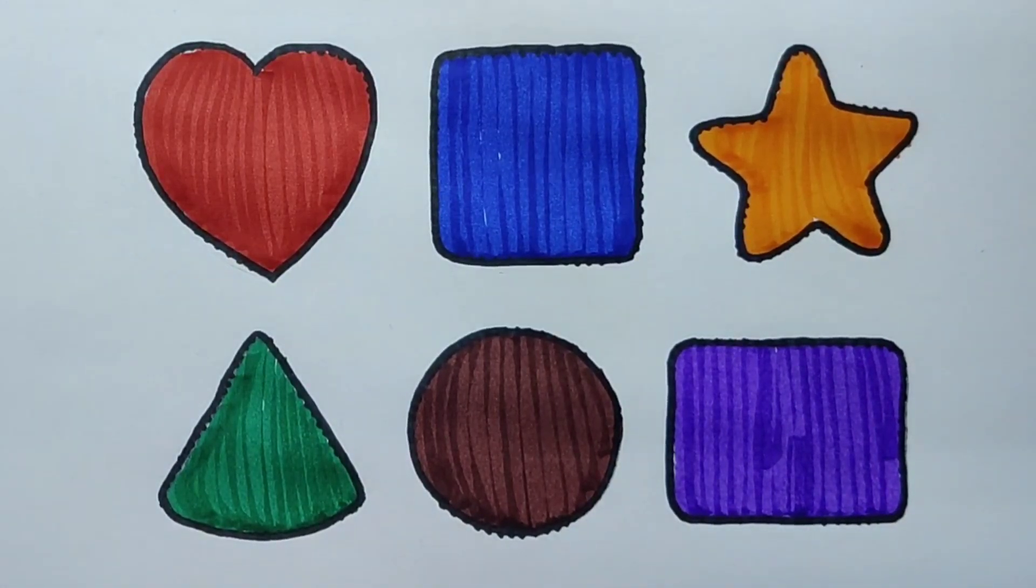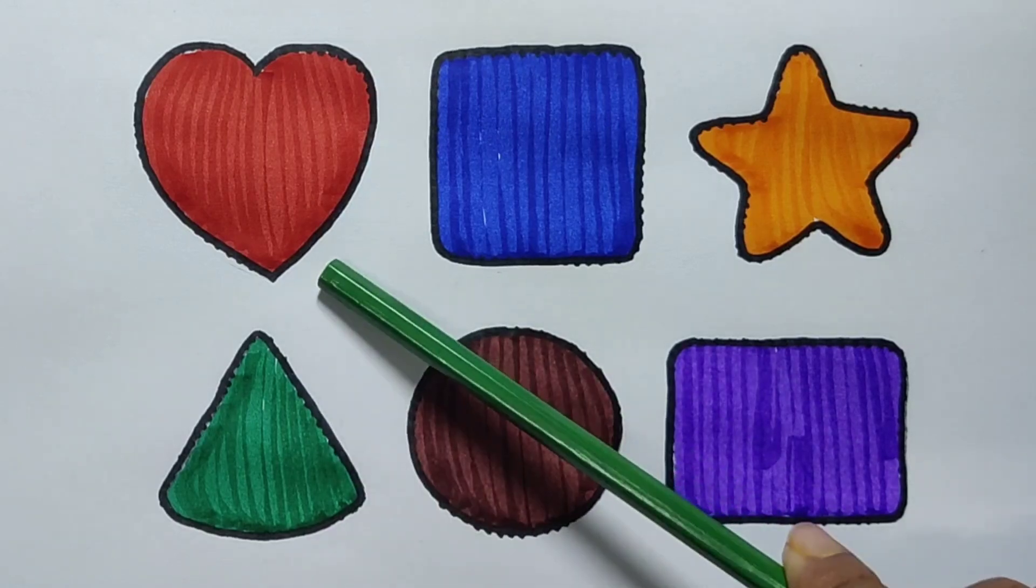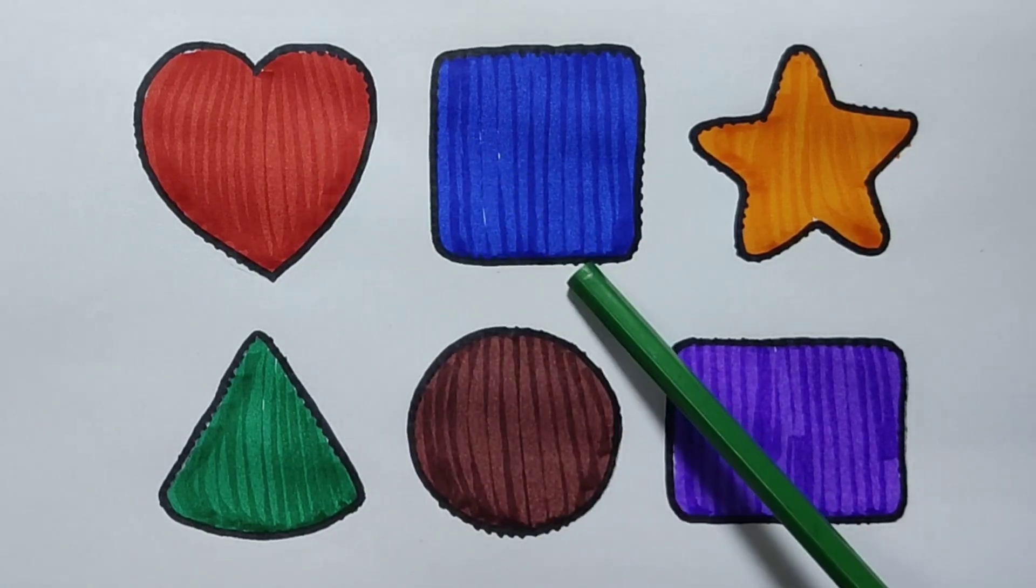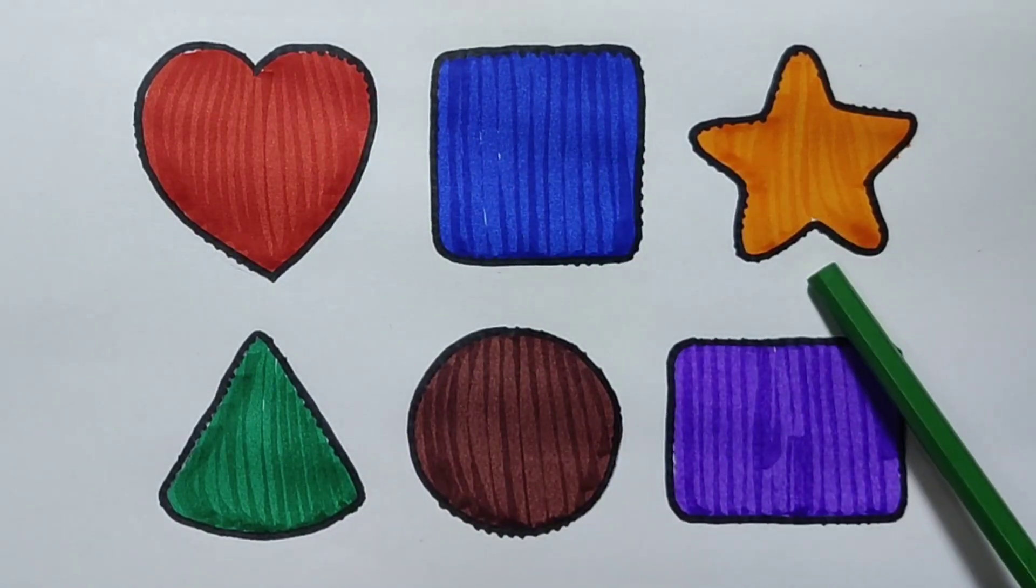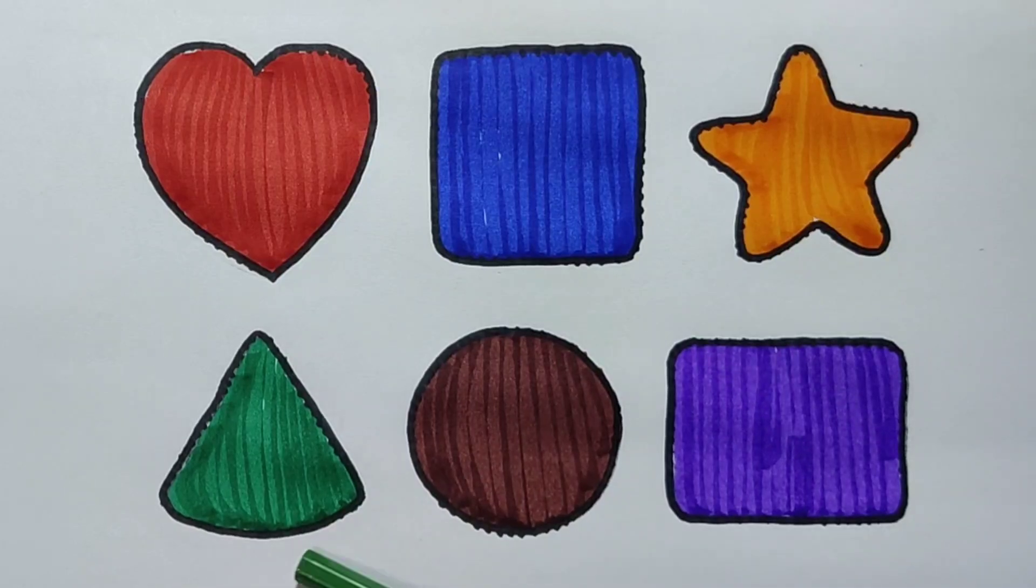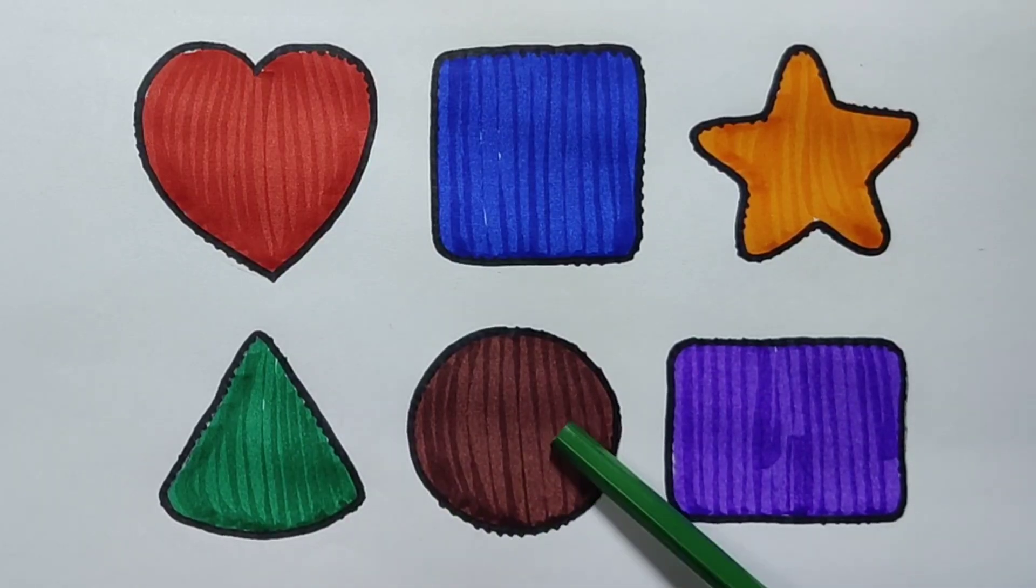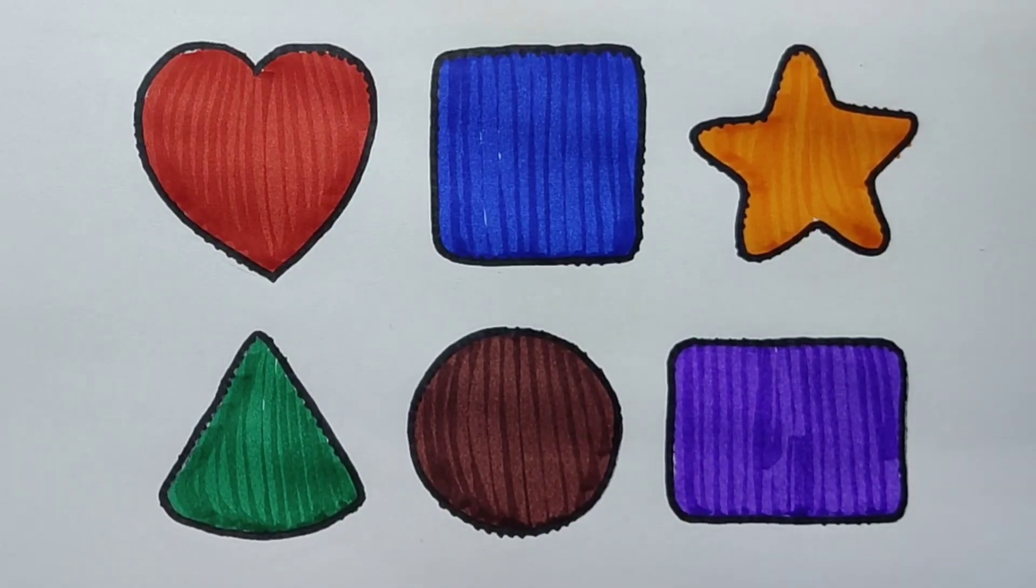What we learned: we learned red color heart, blue color square, orange color star, green color triangle, chocolate color circle, purple color rectangle.